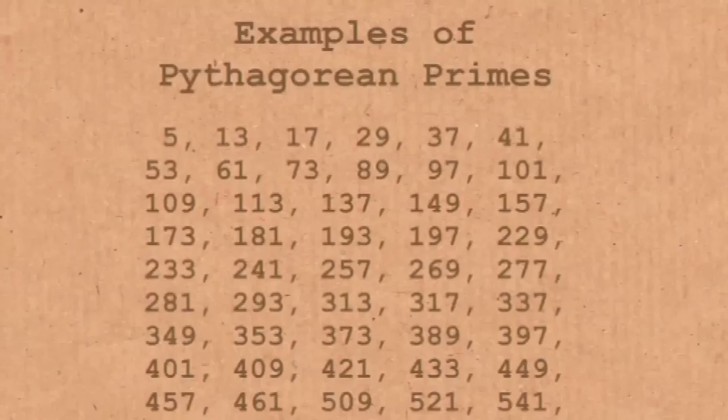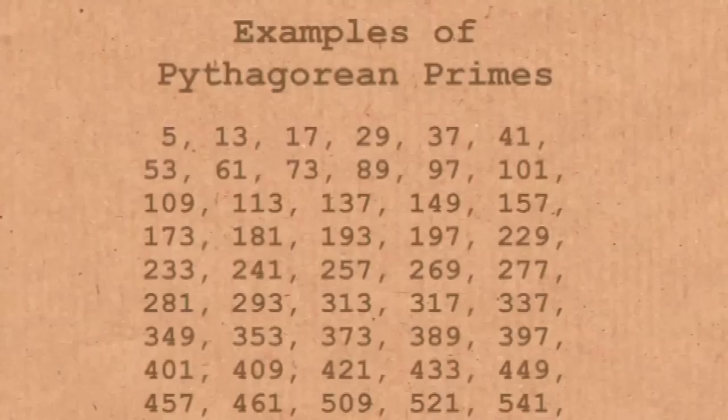We mentioned at the start that your birthday is the thirteenth of the fifth, and they're both Pythagorean primes. Can you remember at what point in your life you realized your birthday was two Pythagorean primes? When you asked me to talk about numbers, I have a really favorite Pythagorean prime which I'd like to tell you about, and then I just realized that 13 and 5 are two nice small ones. Tell me about your favorite one.